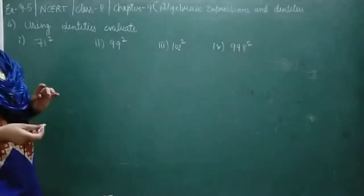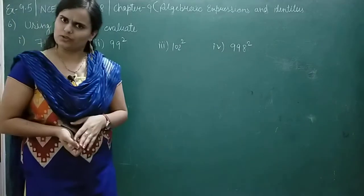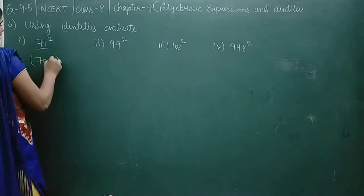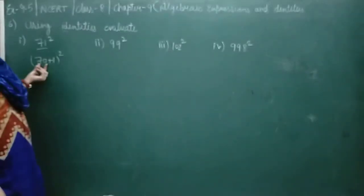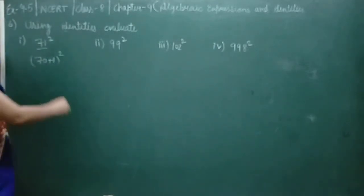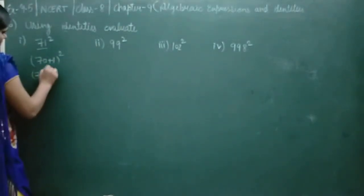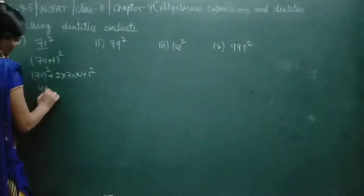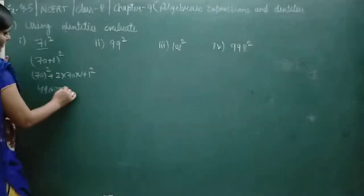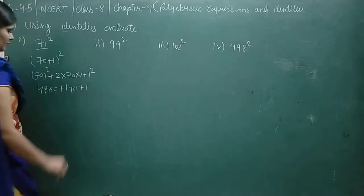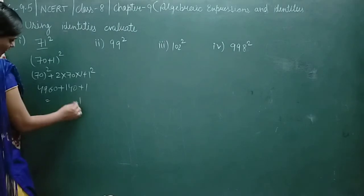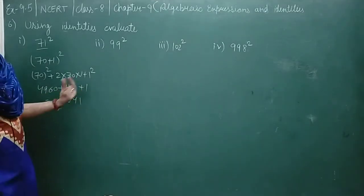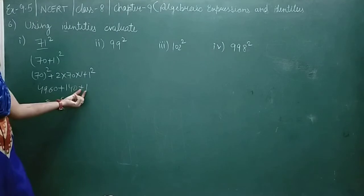We don't need to use the identity every time because the last digit is zero, so squaring is easy. The first part is 71². Why do we write it as 70 + 1? Because squaring 70 is easy since its last digit is zero. Using (a+b)² = a² + 2ab + b²: 70² is 4900, plus 140, plus 1.